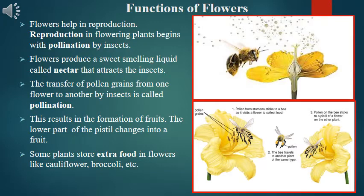Flowers help in reproduction. Reproduction in flowering plants begins with pollination by insects. Flowers produce a sweet-smelling liquid called nectar that attracts insects. The transfer of pollen grains from one flower to another by insects is called pollination. This results in the formation of fruits — the lower part of the pistil changes into a fruit.